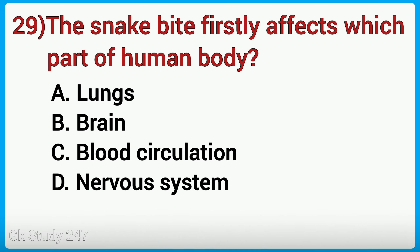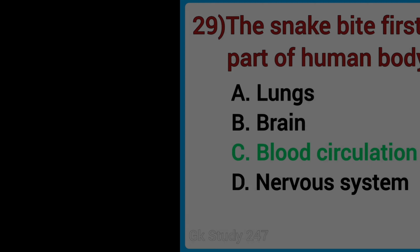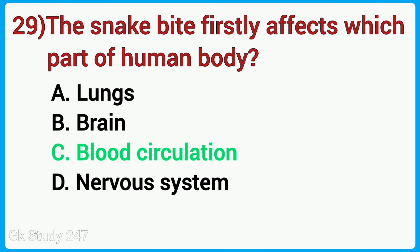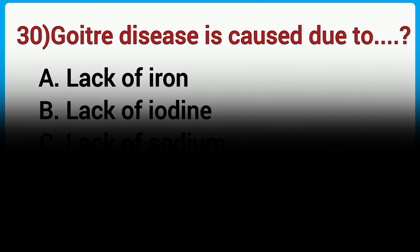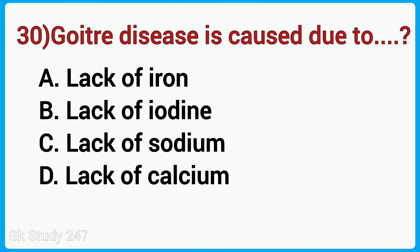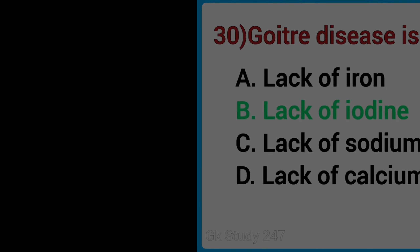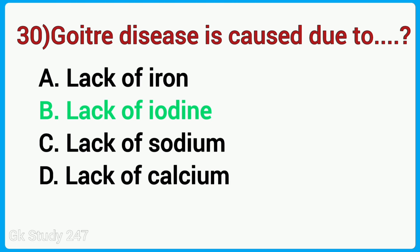The snake bite firstly affects which part of the human body? Answer is blood circulation. Goiter disease is caused due to? Answer is lack of iodine.